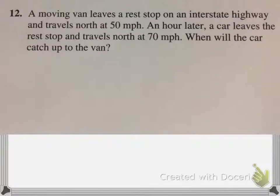Now let's look at one that involves that motion formula. In other words, rate times time equals distance. Here we have a moving van and we have a car. So that should tell you we're going to have two equations, one about the van, one about the car. A moving van leaves a rest stop on an interstate highway and travels north at 50 miles per hour. An hour later, a car leaves the rest stop and travels north at 70 miles per hour. When will the car catch up to the van?